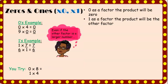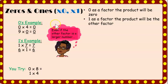Next we have our zeros and ones. When zero is a factor, the product will be zero. When one is a factor, the product will be the other factor. Here we have examples of how the zeros and ones strategy works. Even if the other factor is a large number, the rule still applies — zero times four is zero, nine times zero is zero. And with the ones: one times seven is seven, and six times one is six.